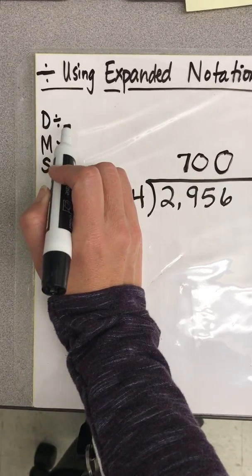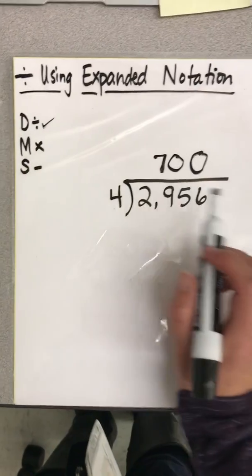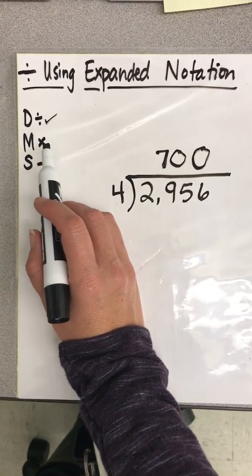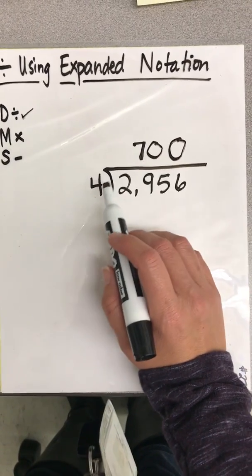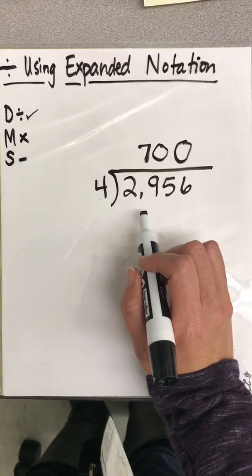Okay, so that's the division step. And we're going to go ahead and put a check mark to show we've divided. And now we're going to go ahead and multiply. And when we multiply, we're taking that 700 that we wrote on top and multiplying it by the four to figure out how much left we have to divide up.